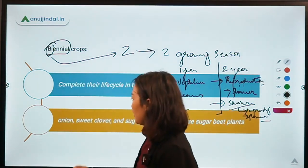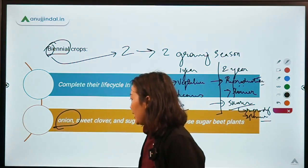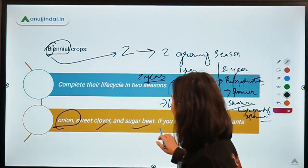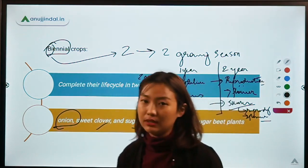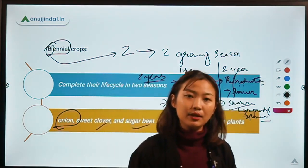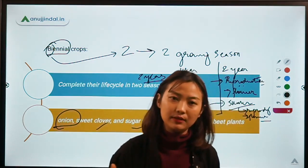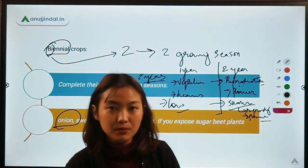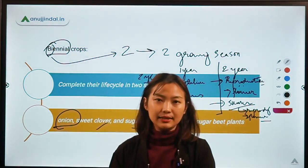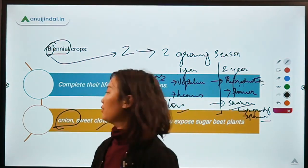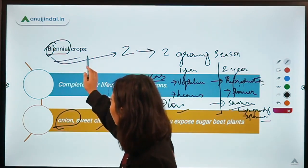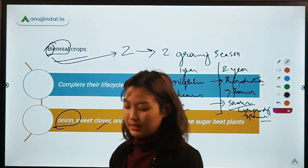Examples of biennial crops include onions, sweet clover, and sugar beet. For example, an onion in the first season establishes its leaves and bulbs and develops roots properly. In the second year, it starts to flower. This is what a biennial crop is.